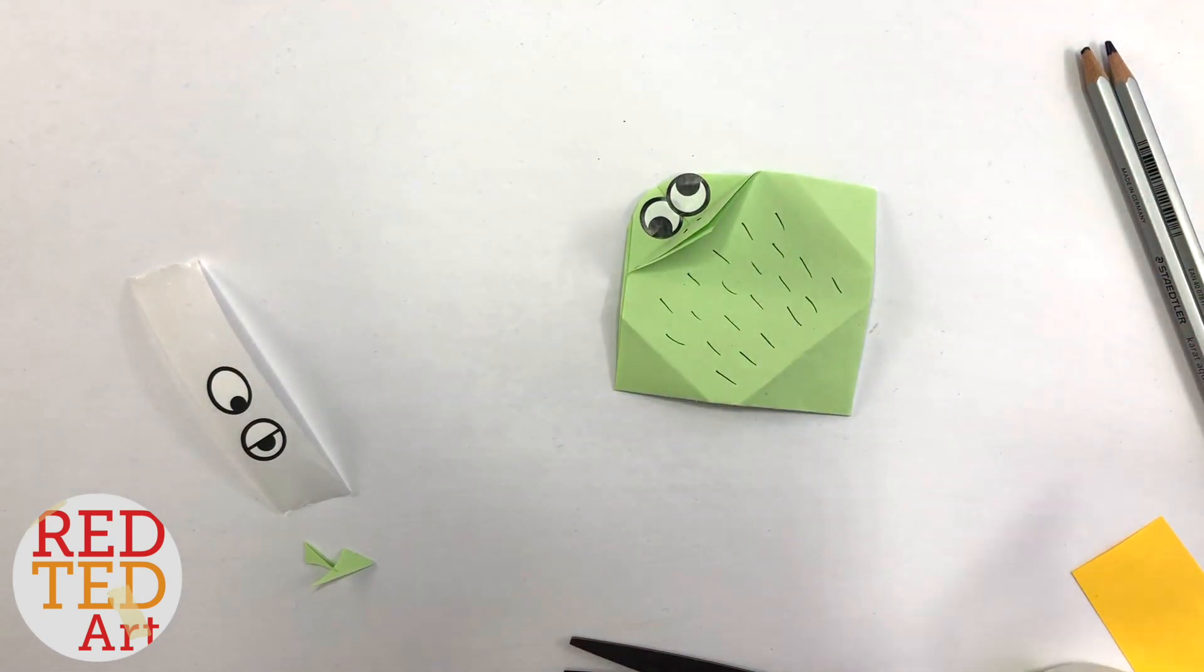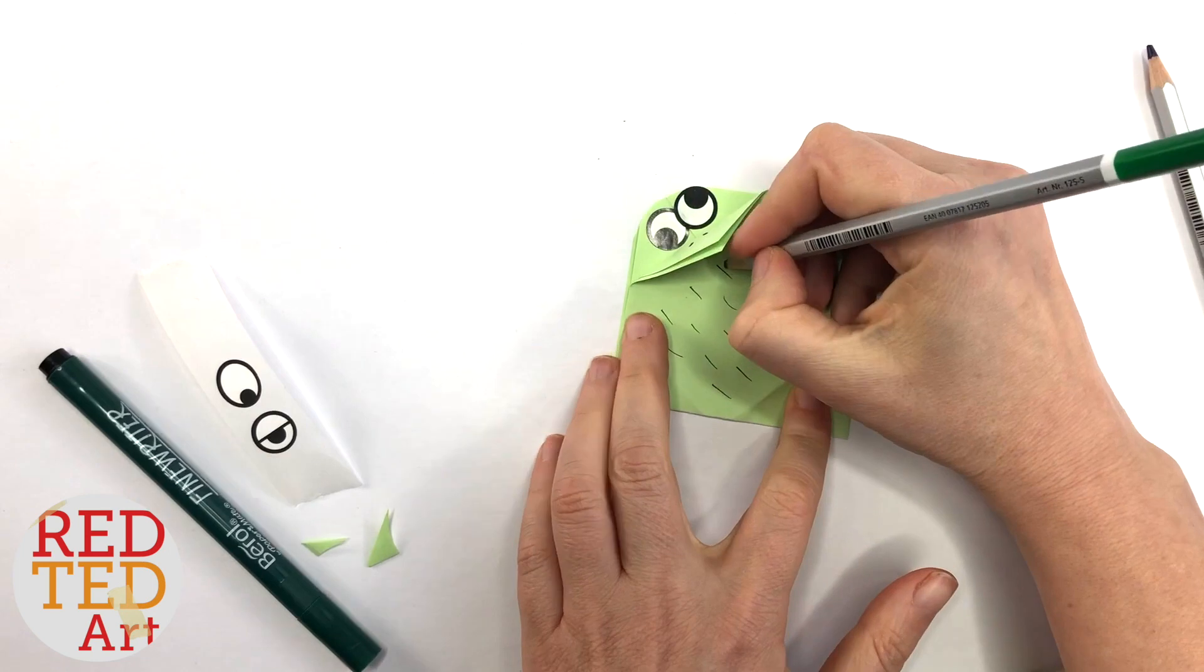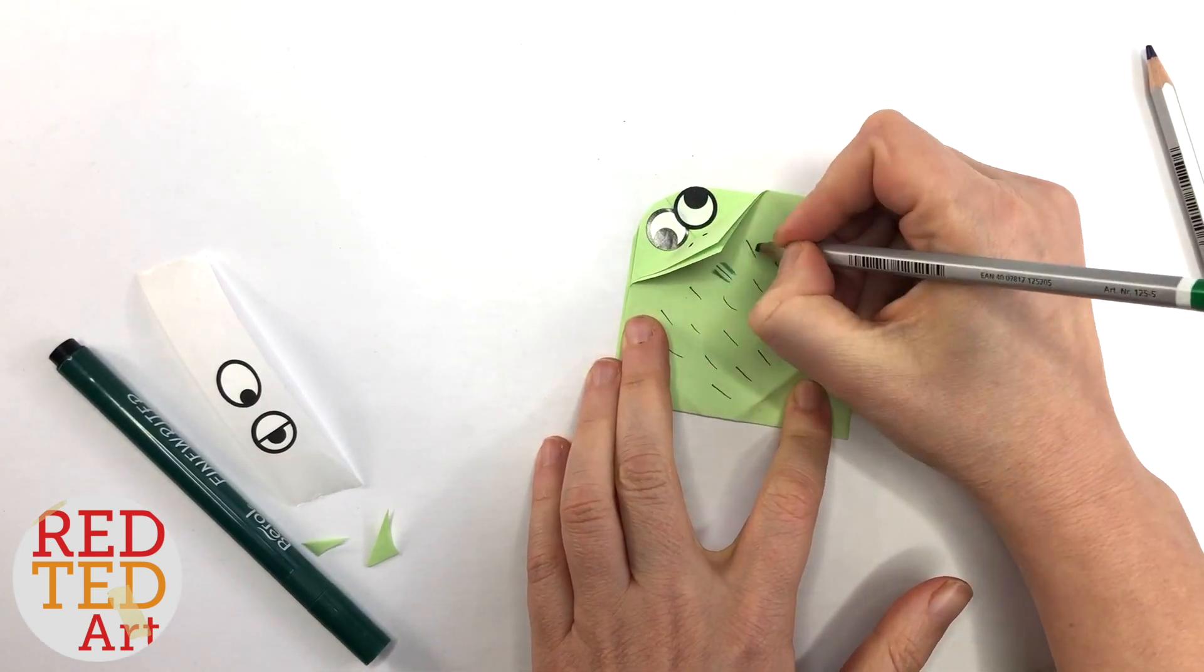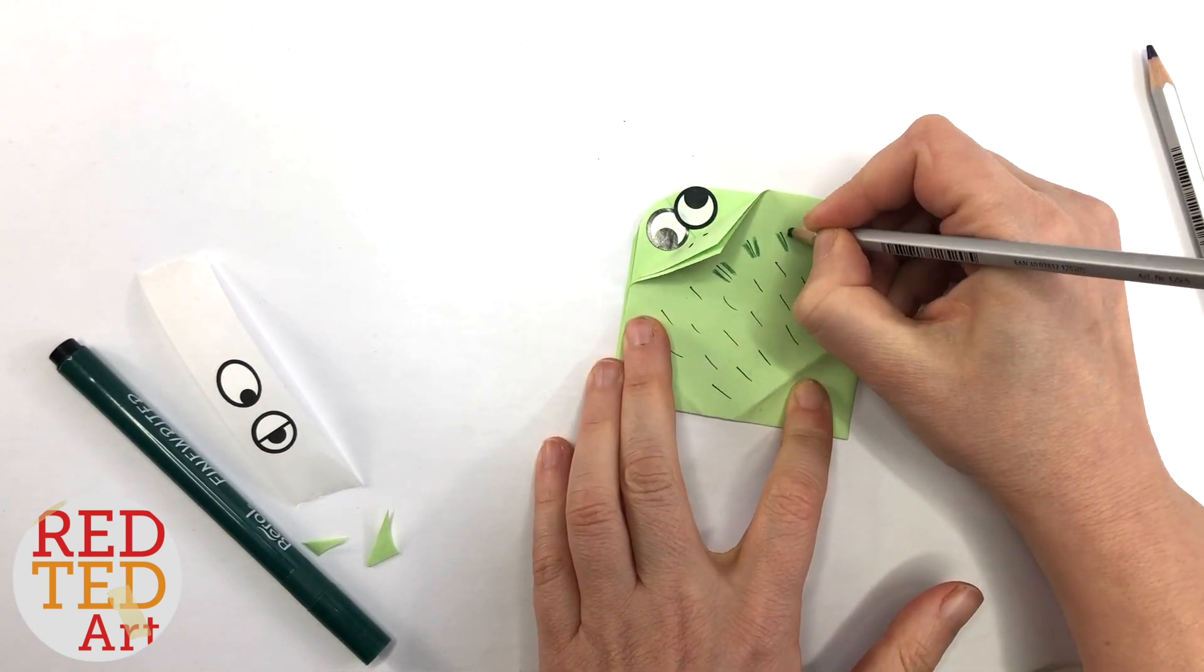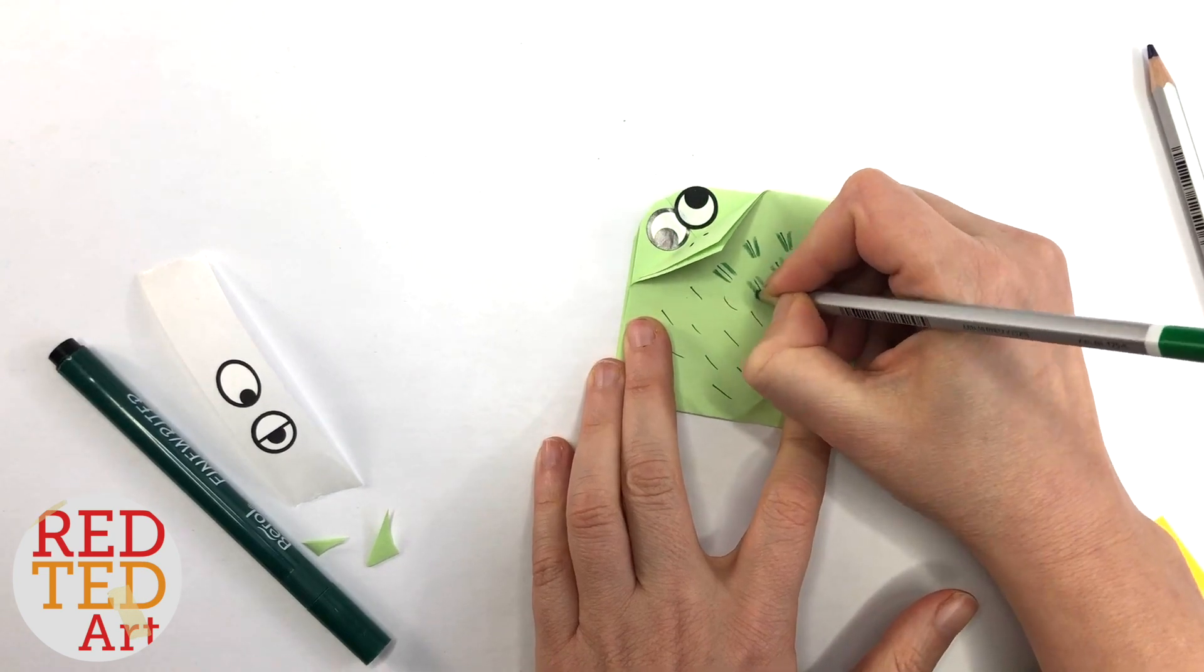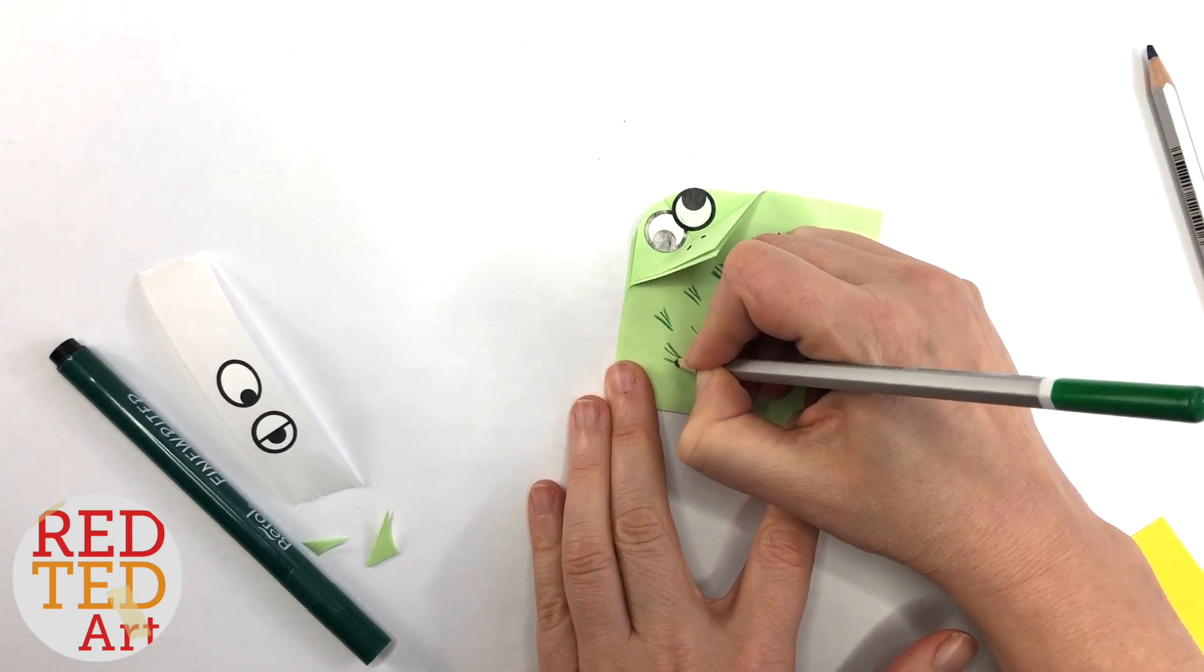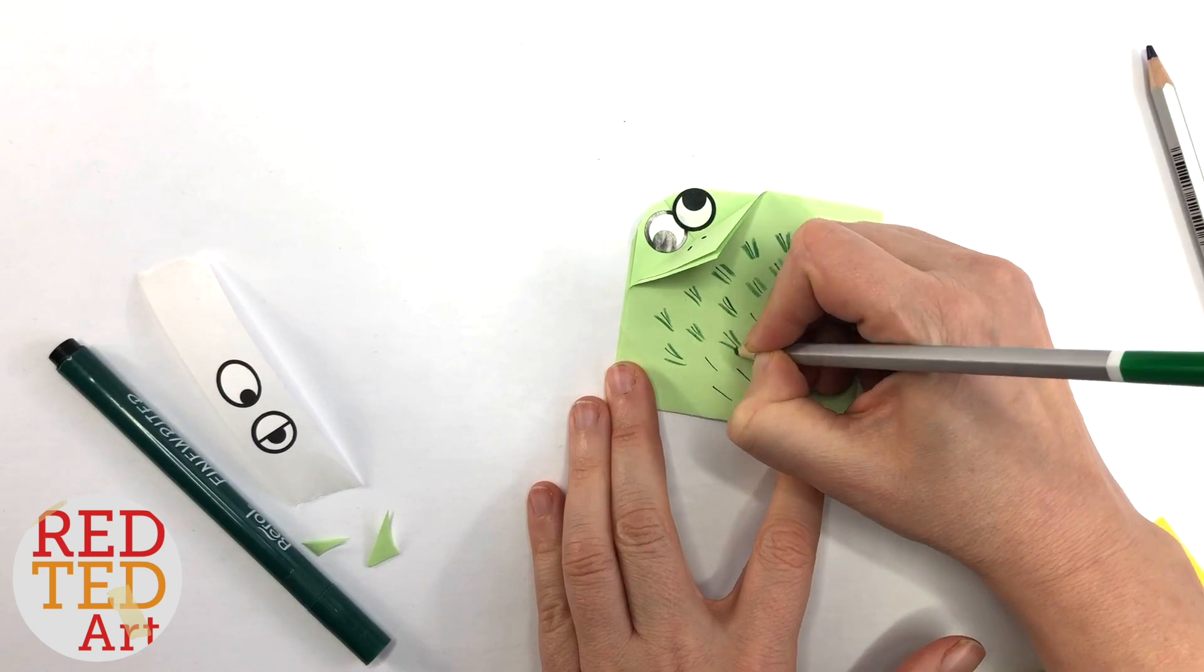And you can add some colors. So I've brought some other colors out. I think it's quite nice to have maybe a little bit contrasting. So this is the bit where you can basically get creative, doodle away, and make each bird different.